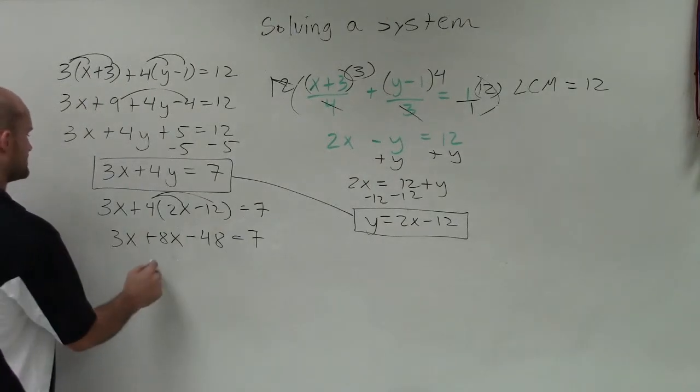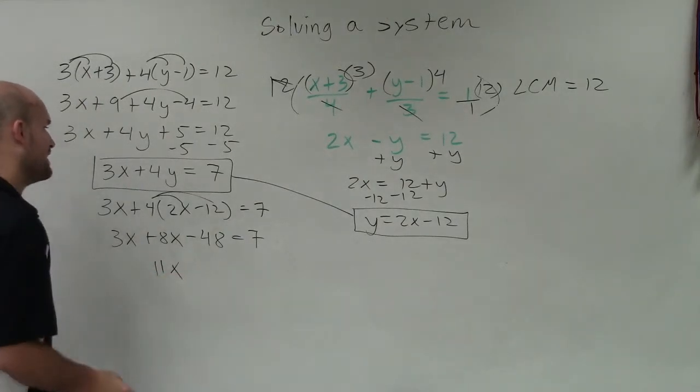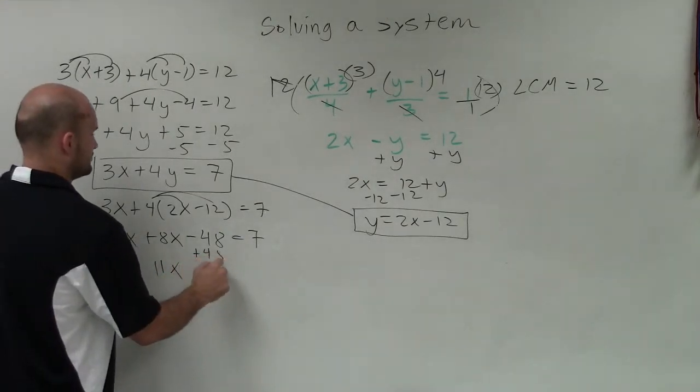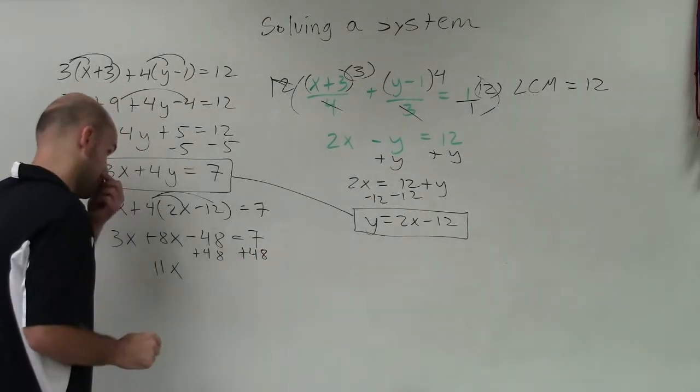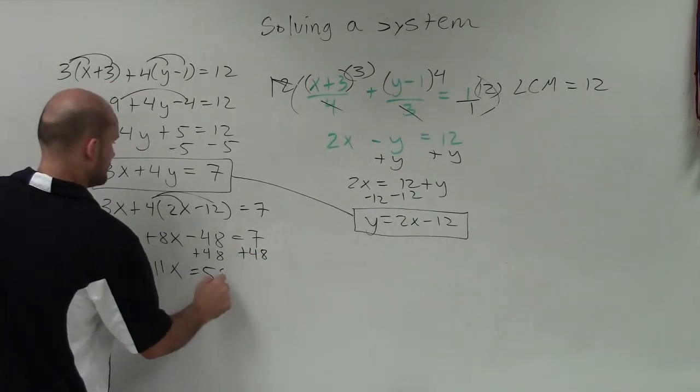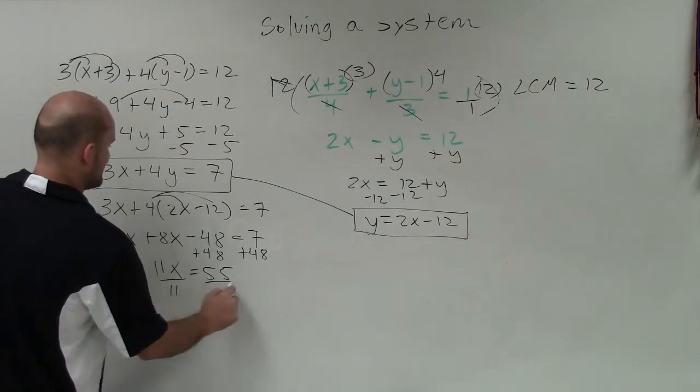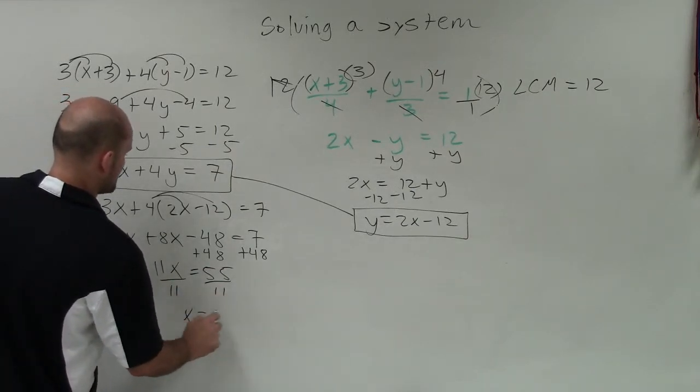Well 8x plus 3x is going to be 11x. Add 48, that's going to equal 55. Divide by 11, divide by 11, x equals 5.